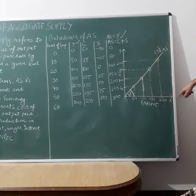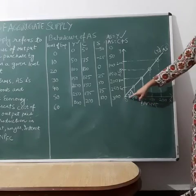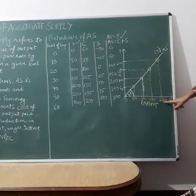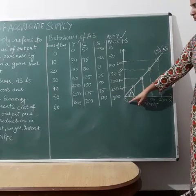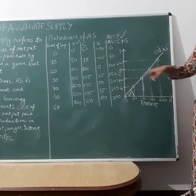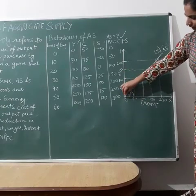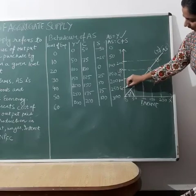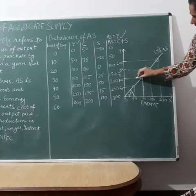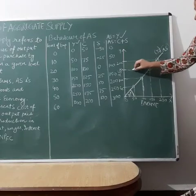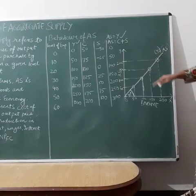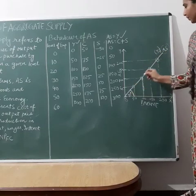Now we will draw the curve. On the x-axis we have income, and on the y-axis we have aggregate supply. The values on both axes are 0, 50, 100, 150, and 200. When income is 0, aggregate supply is 0; when income is 50, aggregate supply is 50; when income is 100, aggregate supply is 100; and so on — all the points are equal.